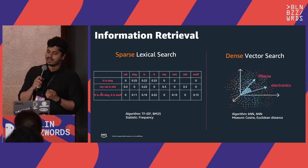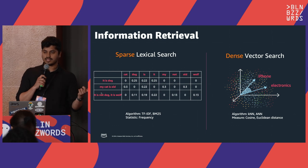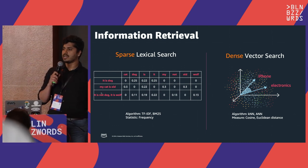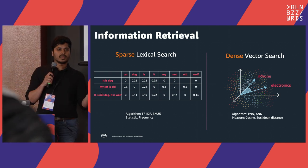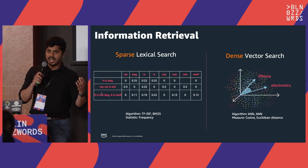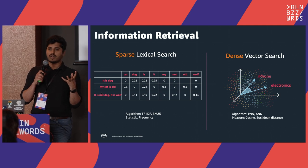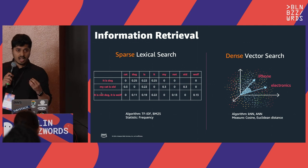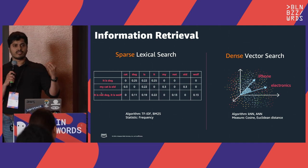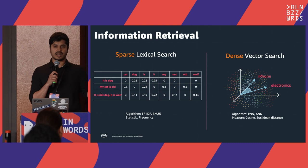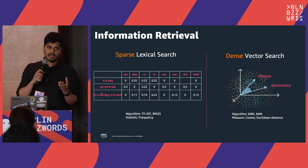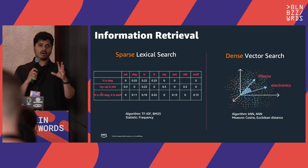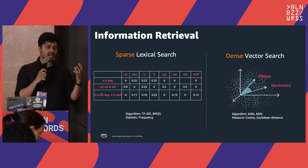On the other hand, we have dense retrieval, which is vector search. Here you encode your documents and queries into high-dimensional vectors. You get these vectors from machine learning models trained from scratch or fine-tuned from a pre-trained model to understand the semantic similarity between text elements. Given a query vector, you find the nearest document vector using exact KNN or approximate K-nearest neighbor algorithms, by calculating the distance or angle between your query and document vectors.